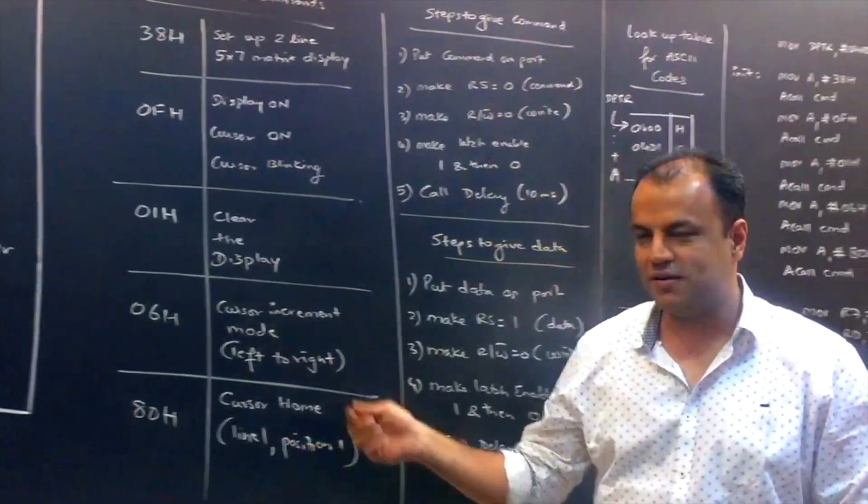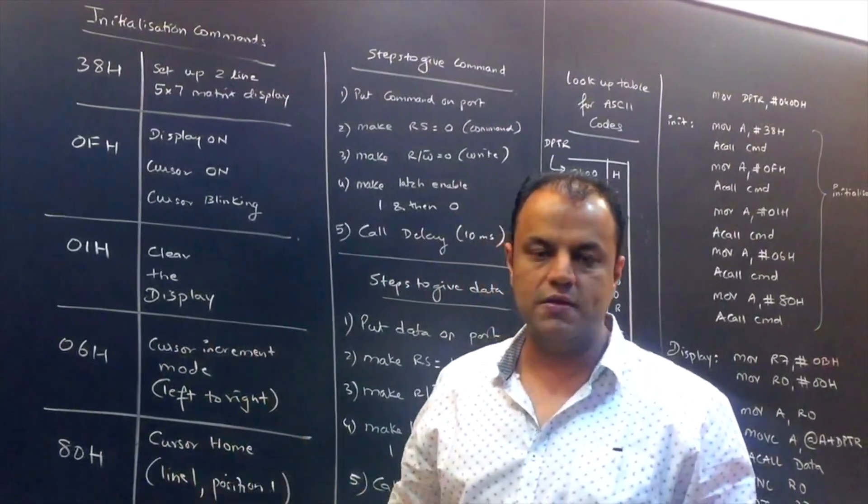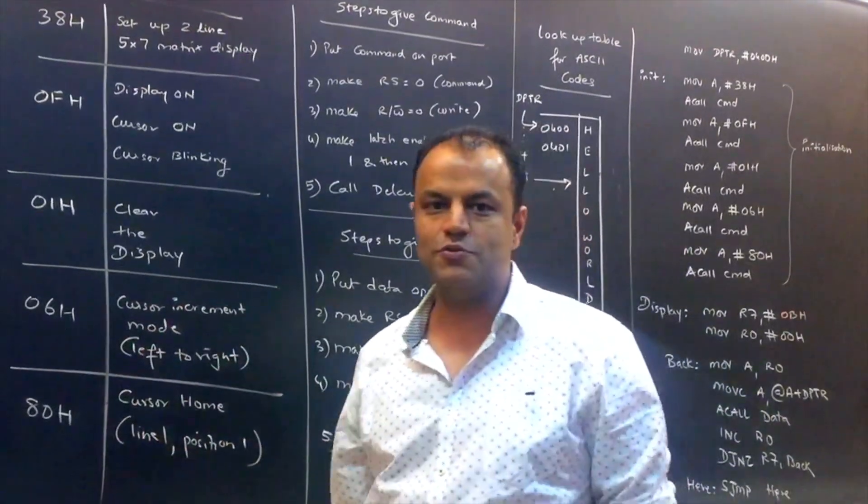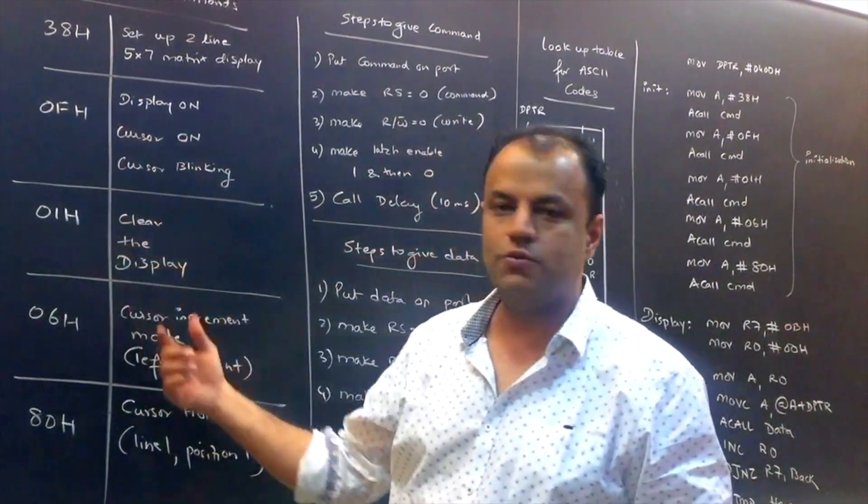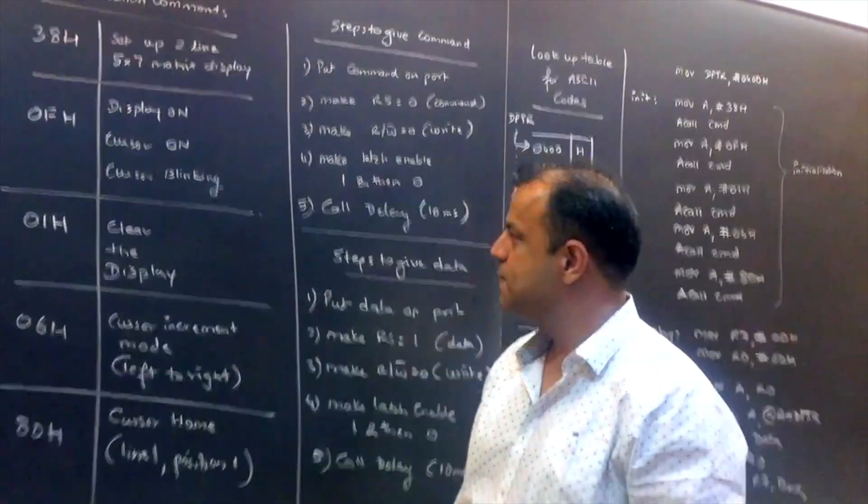So these are a set of commands. The numbers you've got to memorize. 38, 0F, 01, 06 and 80 are the numbers.